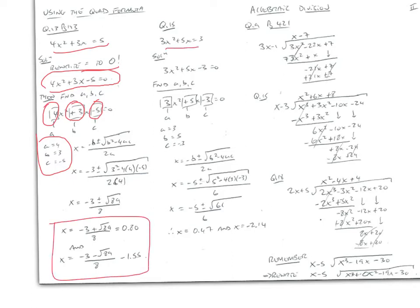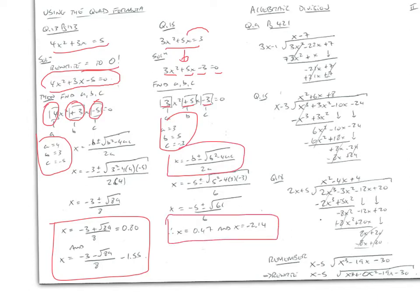Same again with 3x²+5x = 3. We can't do anything until we rewrite it so everything equals 0: 3x²+5x-3 = 0. Now we can find a, b, and c. Put them into your bubbles in the calculator and get two values for x: 0.47 and -2.14.